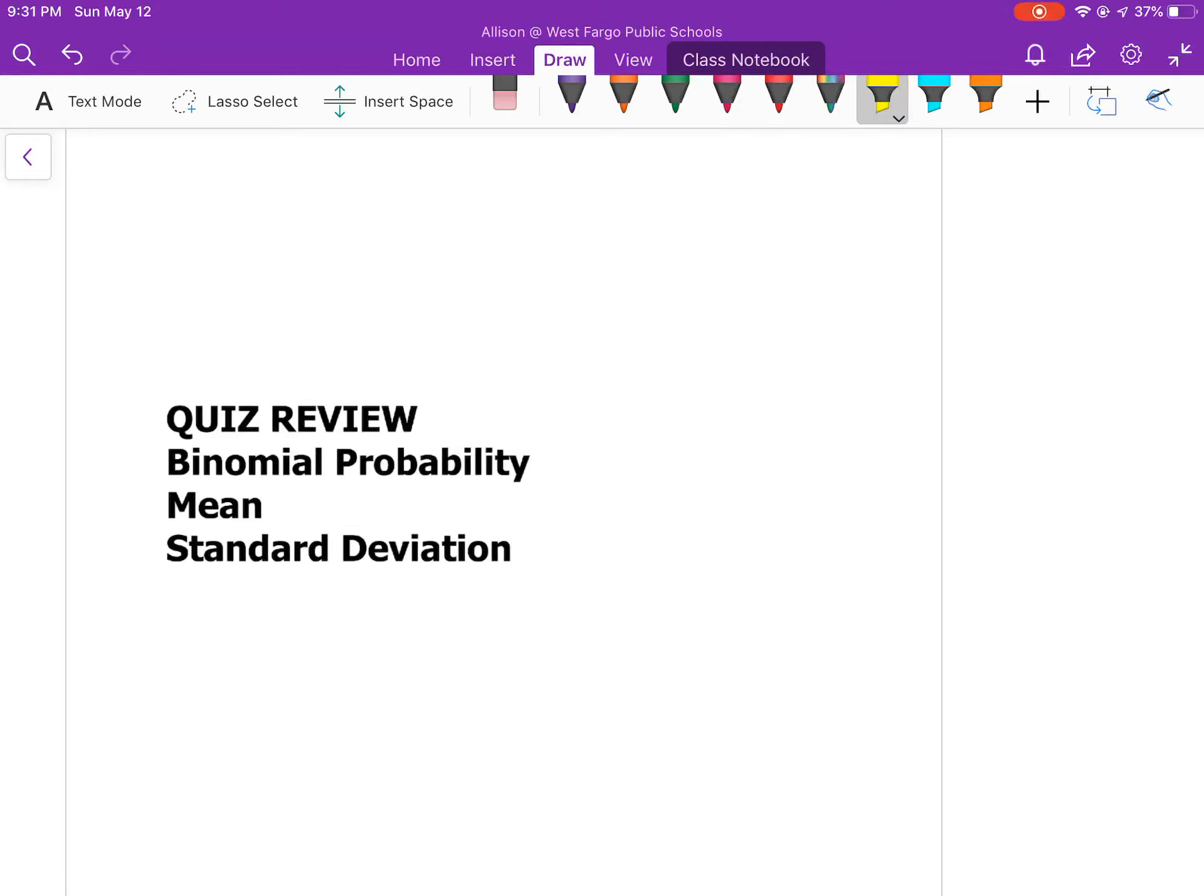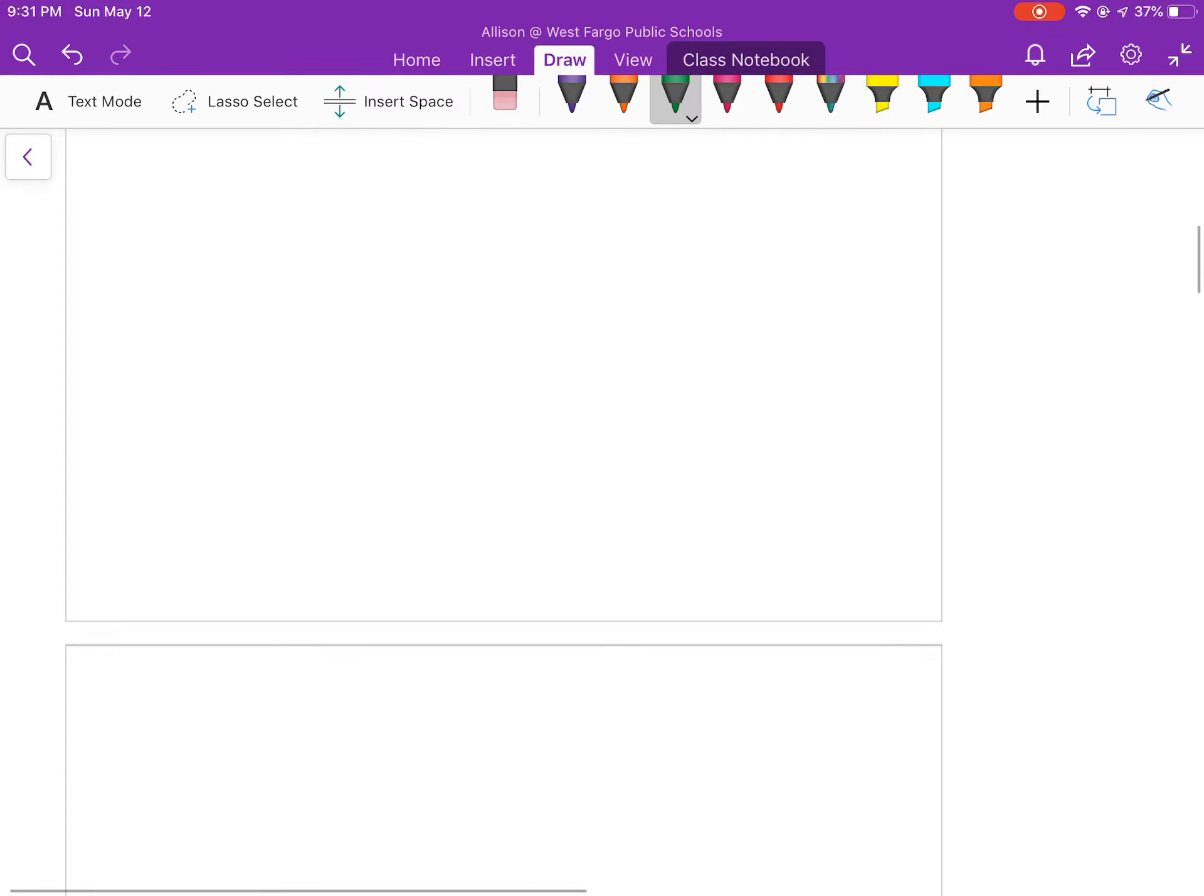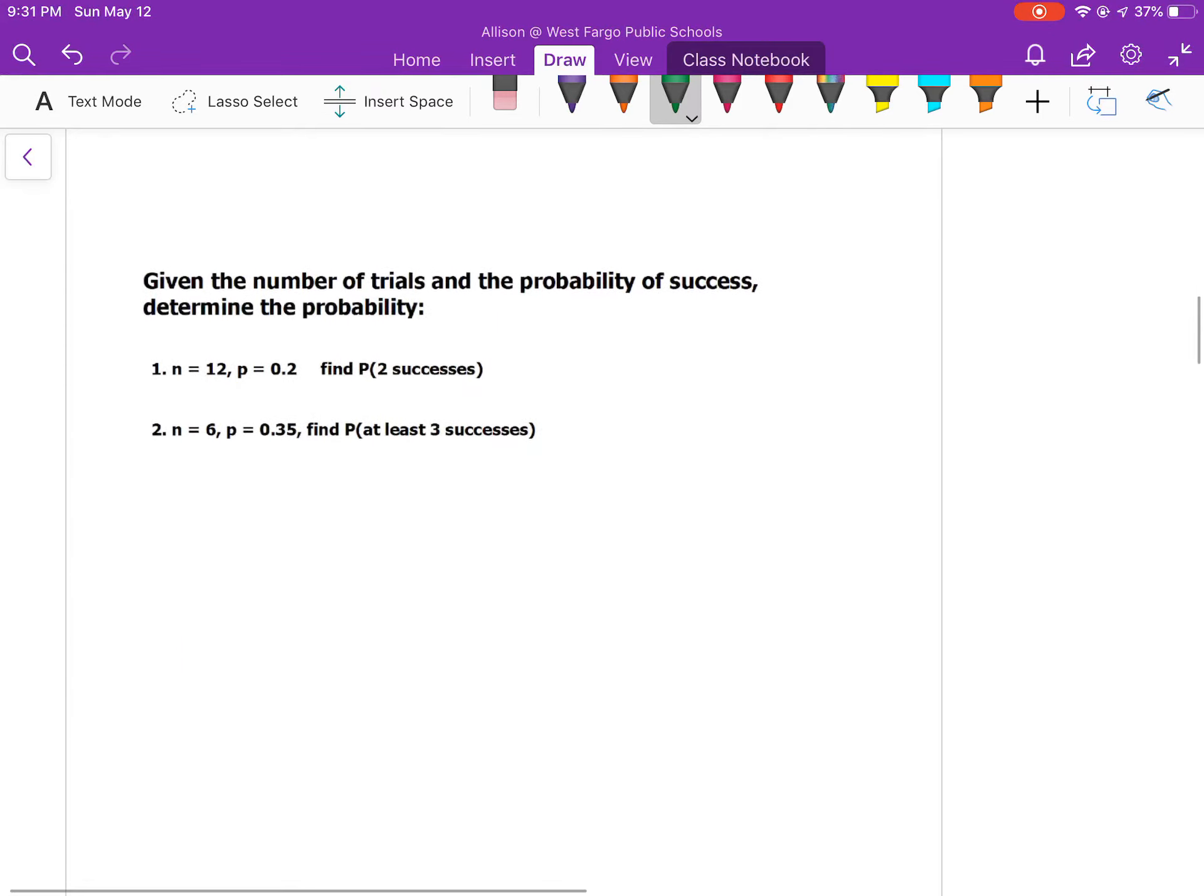Hey class, I wanted to do a couple examples worked out from the quiz review. We're going to review binomial probability and then standard deviation and mean.